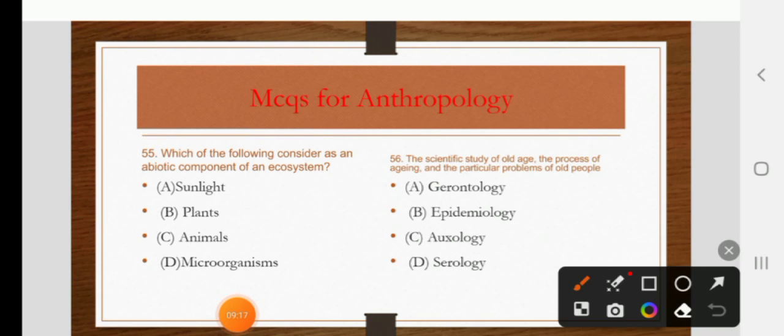Which of the following is considered an abiotic component of an ecosystem? Options are sunlight, plants, animals, or microorganisms. The right answer is A: sunlight.